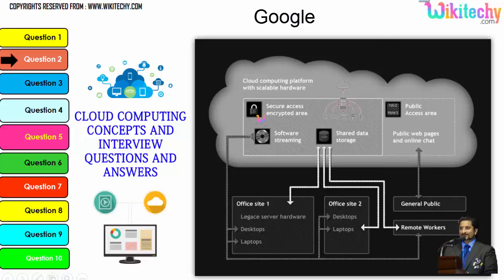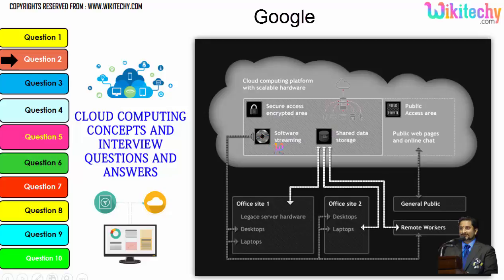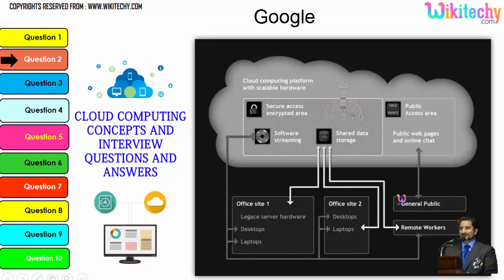Cloud computing has a public access area with public web pages for end users, and apart from this there is secure data access, shared data storage, and software streaming. Companies can use it as a private solution and the public can use it to access web pages or websites. This is how cloud computing works.